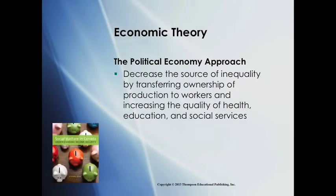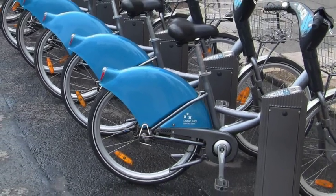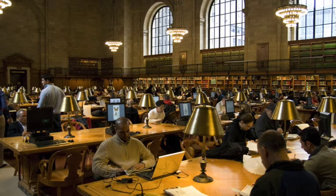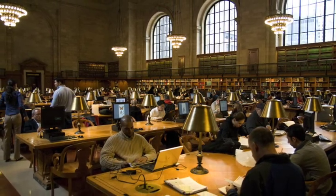A number of social welfare programs and services have really embraced this political economy approach, challenging the capitalist order and creating new approaches to delivering collective resources and services. The illustrations in this presentation include two examples of providing services collectively at a small scale. For example, in many cities around the world, public bicycle sharing has been developed — you might like a bicycle but not use it every day, so sharing with others makes sense and means more people can access bicycles at a lower cost. The public library is another great example: you might need a book but not need to keep it forever, so the library allows access to information as a borrower rather than an owner.